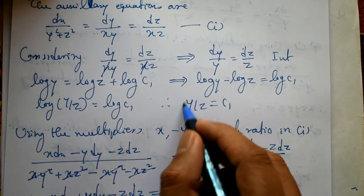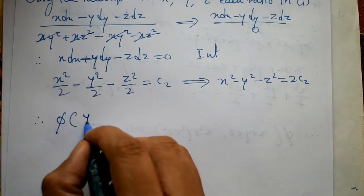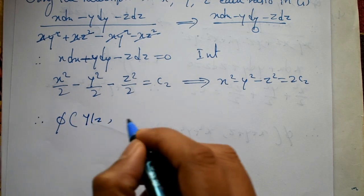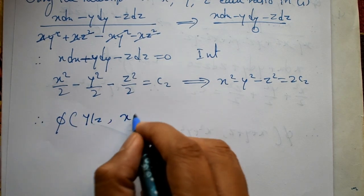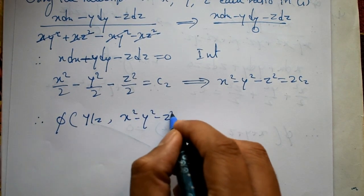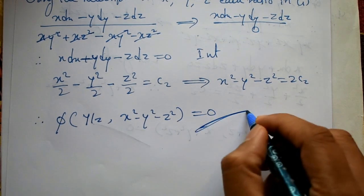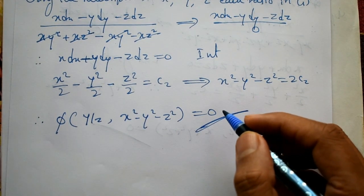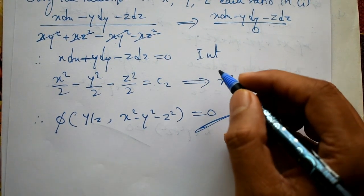Therefore, the general solution is φ(u, v) = 0, where u = y/z and v = x² − y² − z². So the required general solution is φ(y/z, x² − y² − z²) = 0. Please subscribe to my channel, like, and give comments. Thank you.